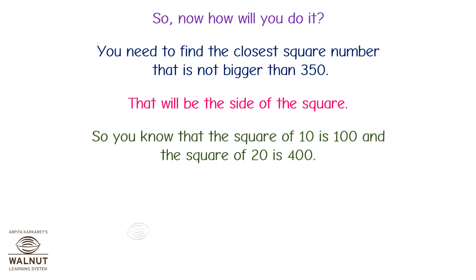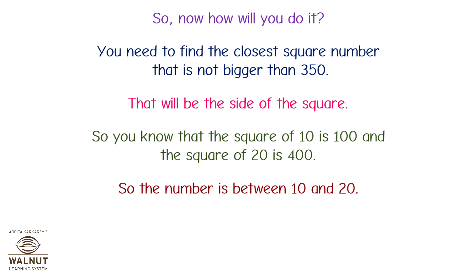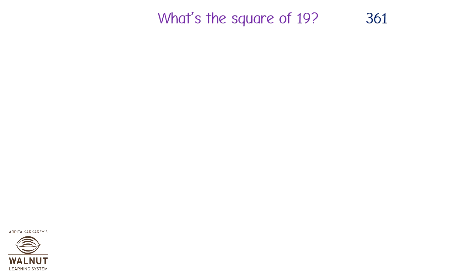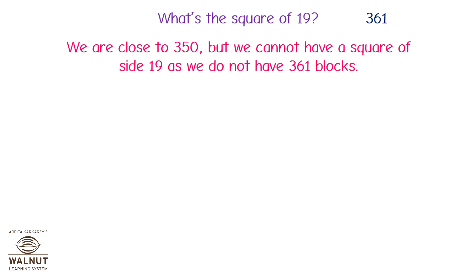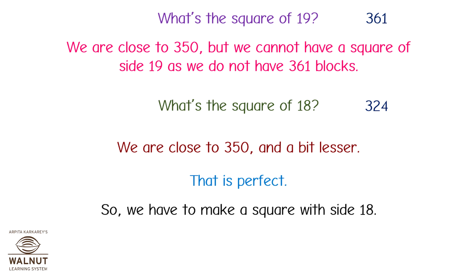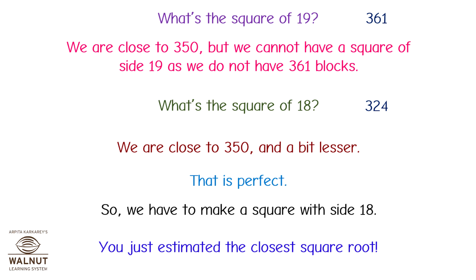You know that the square of 10 is 100 and the square of 20 is 400, so the number is between 10 and 20. 350 is closer to 400 than 100, so let's check numbers close to 20. The square of 19 is 361 — we are close to 350 but we cannot use side 19 as we don't have 361 blocks. The square of 18 is 324, which is close to 350 and a bit lesser — that is perfect. So we have to make a square with side 18. You just estimated the closest square root.